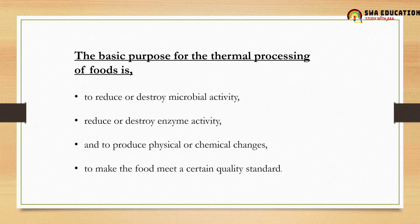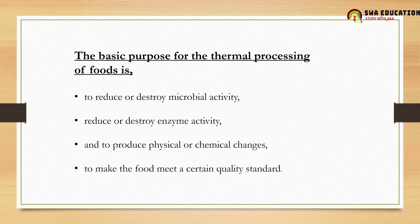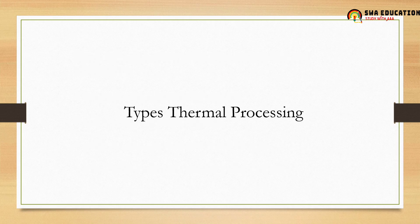The last basic purpose is to make food meet a certain quality standard. For example, we can't consume raw milk because it contains bacteria. To destroy them we need to heat or boil the milk, which destroys the harmful bacteria and gives us quality milk fit for consumption. So the four basic purposes of thermal processing are: destroy or reduce microbial activity, destroy or reduce enzyme activity, produce physical or chemical changes, and meet quality standards.